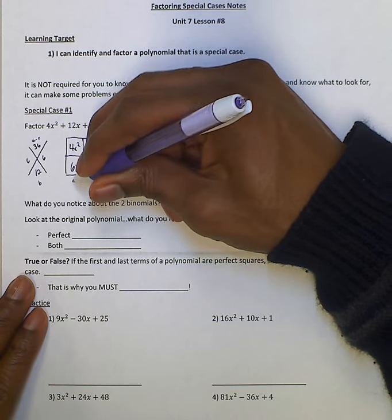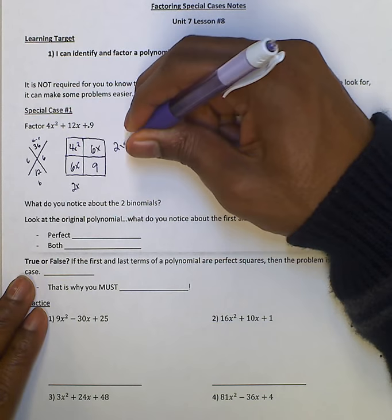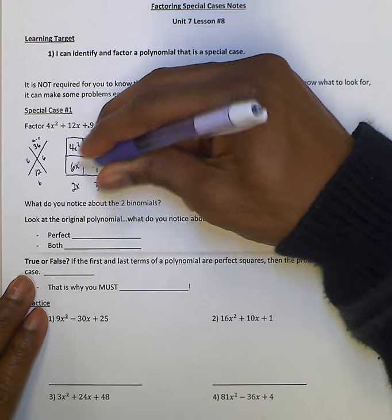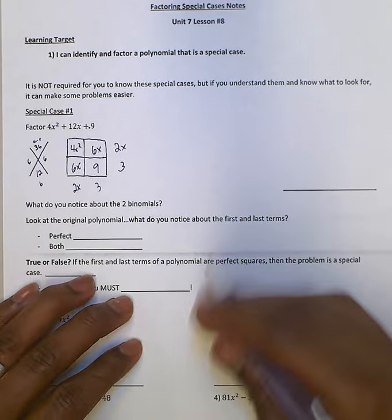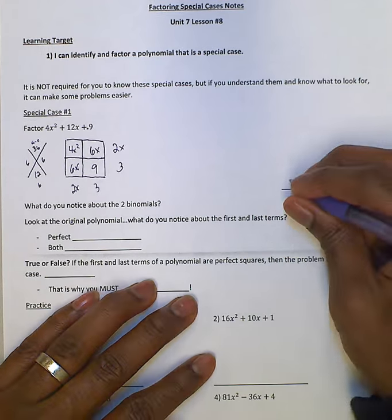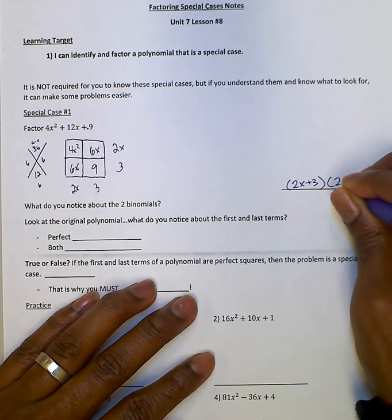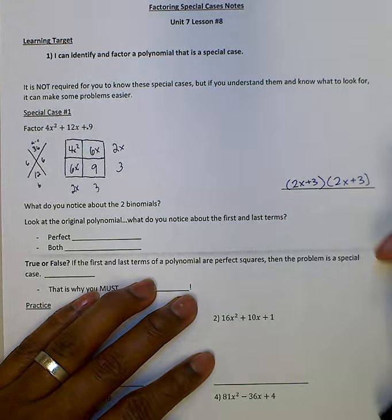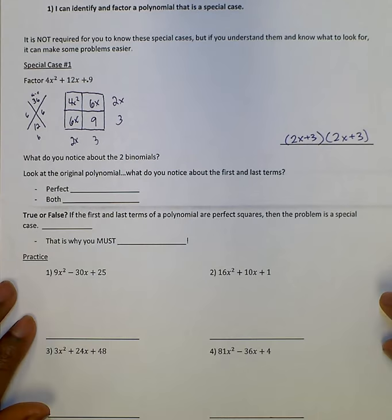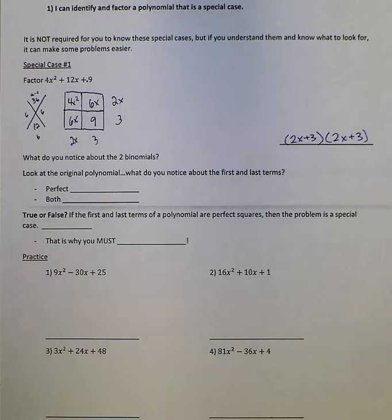That's going to be 2x, that's going to be 2x, that's going to be 3, that's going to be 3. And so our binomials are 2x plus 3 and 2x plus 3. What do you notice about the binomials? They are the same.